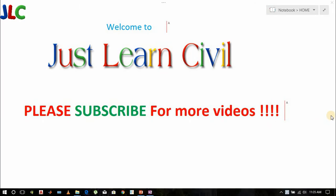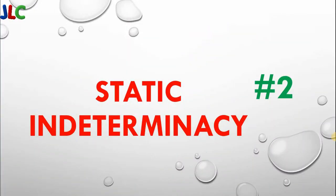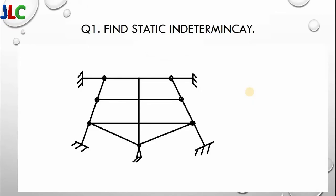Hello, welcome to Just Learn Civil. Please subscribe for more videos. This is the second video on static indeterminacy. Here we will learn about finding the static indeterminacy of beams with different end conditions — specifically when one end is fixed and another is pinned, or when both ends are pinned.